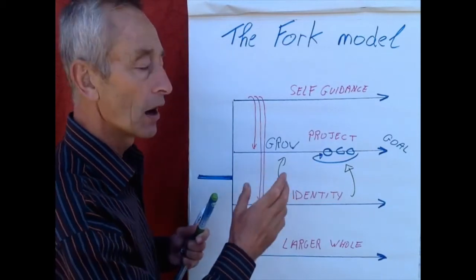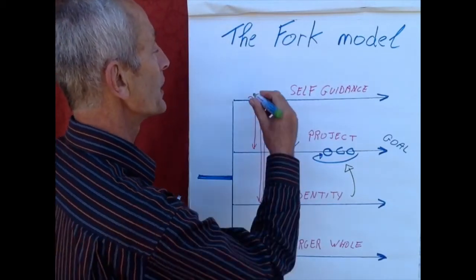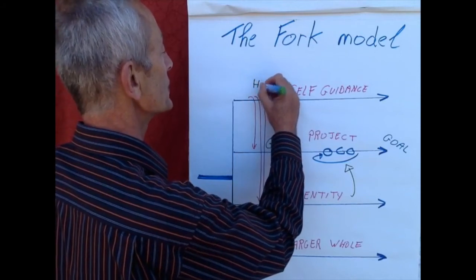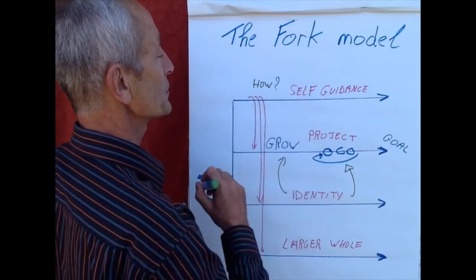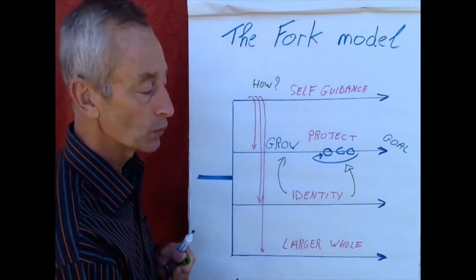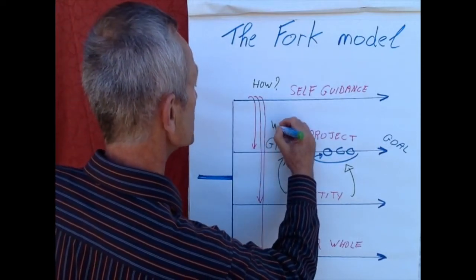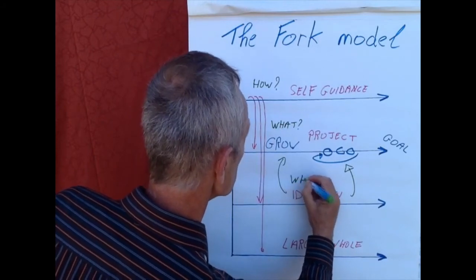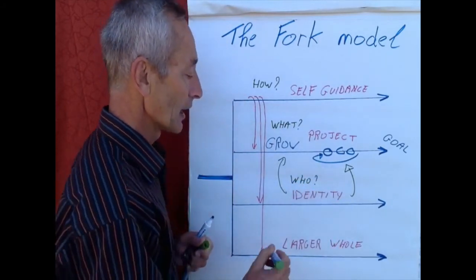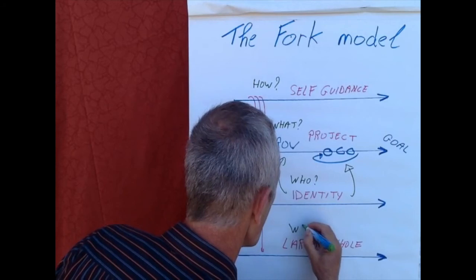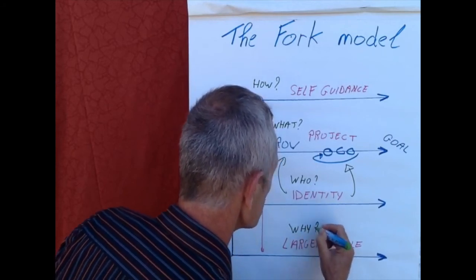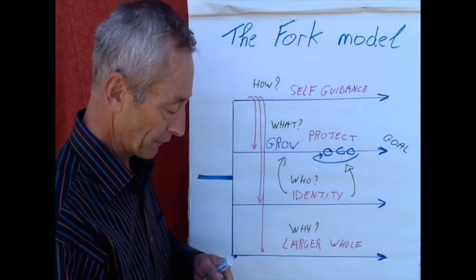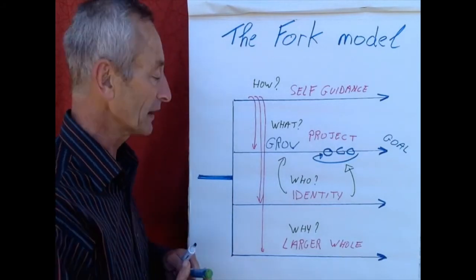These four tracks are independent tracks and relate to fundamental questions. This is the how question: How are you dealing with your progression? This is the what: What are you aiming at? Who is at play? And why? The why from Simon Sinek must be the foundation, the starting point.